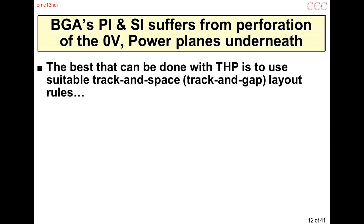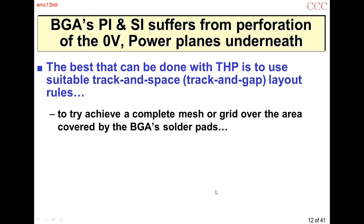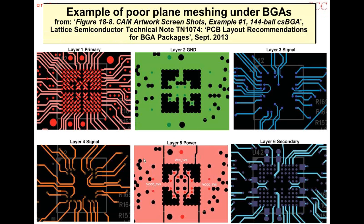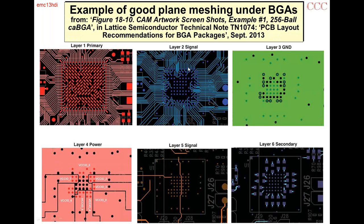With ball grid arrays, power integrity and signal integrity suffers from the perforation of the planes underneath. The best we can do with through-hole plate is use appropriate track and gap layout rules to try and get a mesh over the area covered by the solder pad. Here's a six-layer board example where on the ground plane and power plane we have great big holes — very bad. The place where you want the most solid planes is right underneath the devices, and with a board grid array, that's exactly where you can't have solid planes. Here's a better meshing example with a mesh pattern — much better than a big hole.